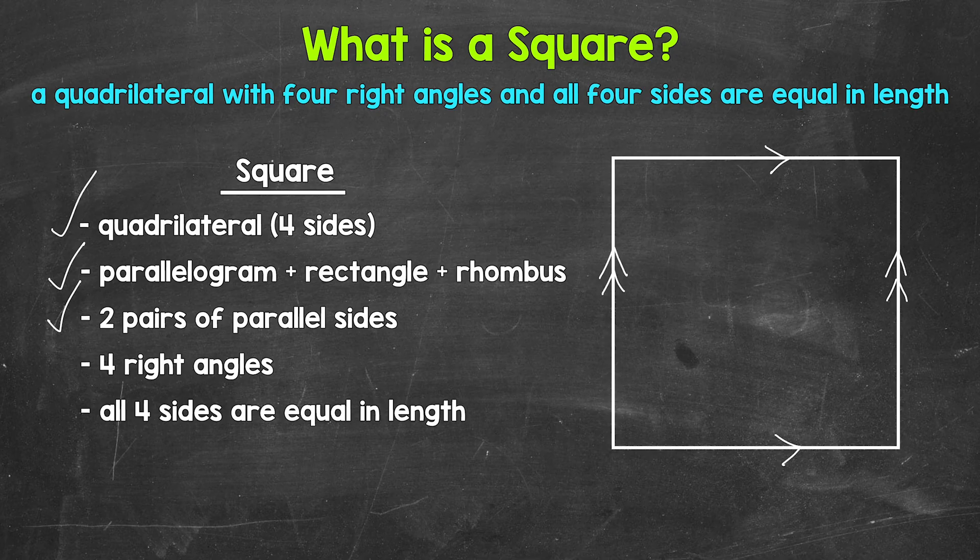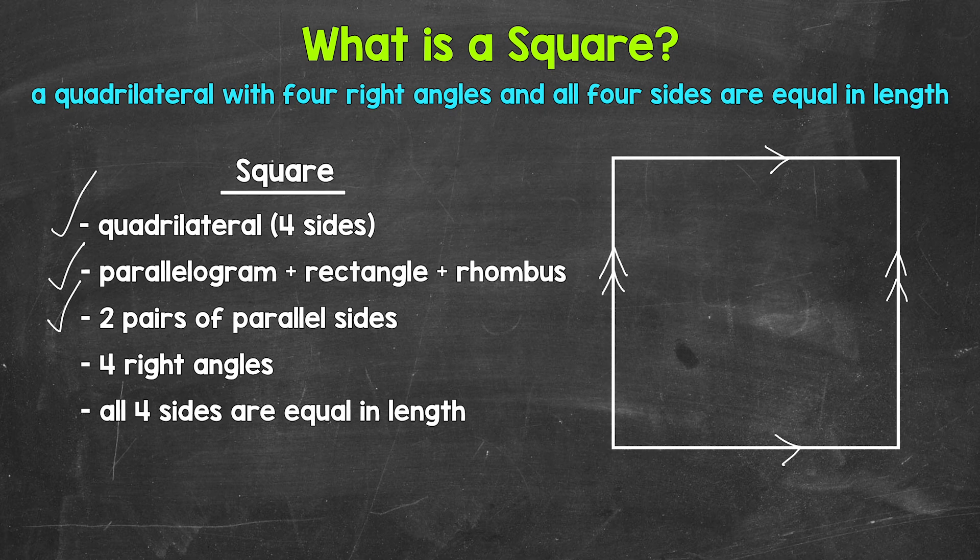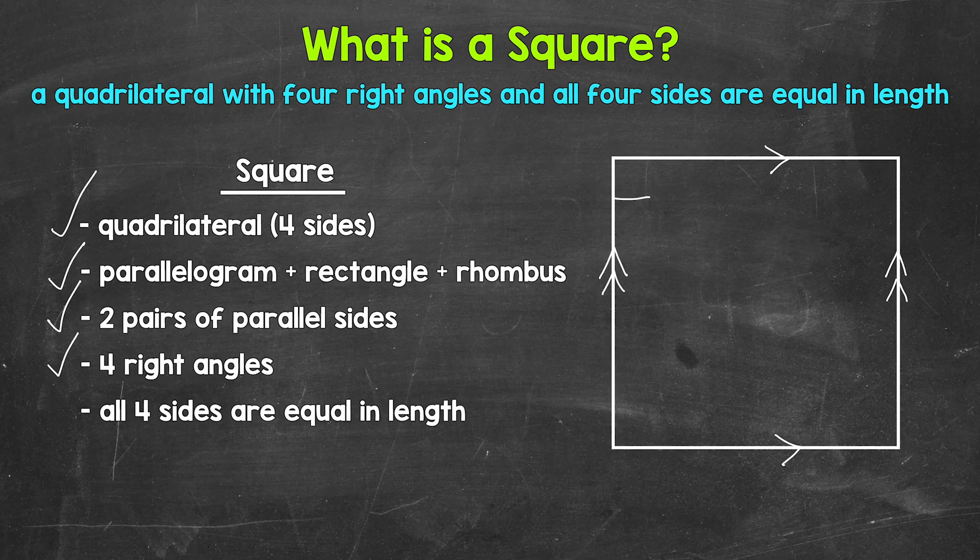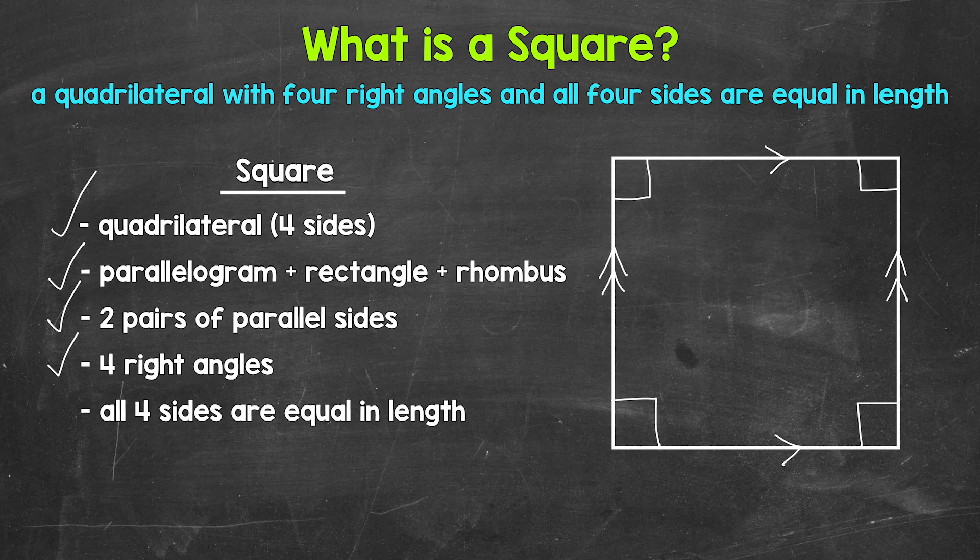To build off of that, squares are also rectangles. Now rectangles are just parallelograms, so they have two pairs of parallel sides. But more specifically, rectangles have four right angles. So again, a square is a rectangle. They are parallelograms with four right angles. So let's mark all of the angles with squares to show that they are right angles, to show that they are 90 degrees.